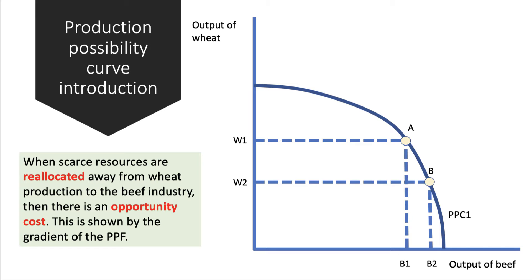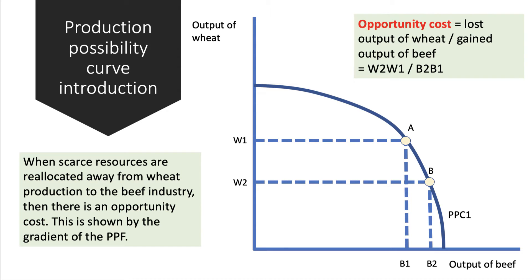Considering a country that's producing wheat and beef, they've got land, labour, capital, and enterprise able to generate an output of each. When scarce resources are reallocated away from one product to another, this involves an opportunity cost. So for example, on the diagram, if we move away from point A down the production possibility curve to point B — in other words, we increase the output of beef by moving from A to B — then there is an opportunity cost in terms of lost output of wheat. The opportunity cost is the lost output of wheat given up when we gain an output of beef.